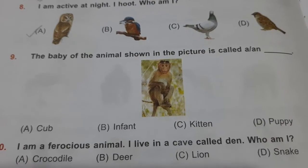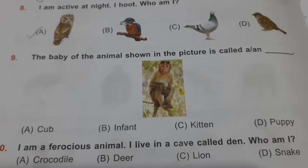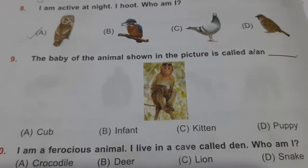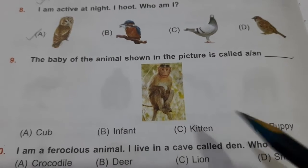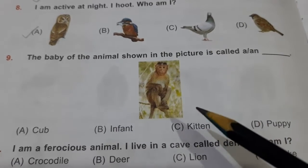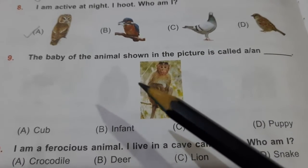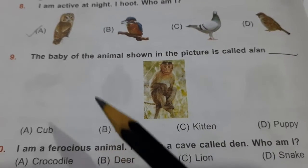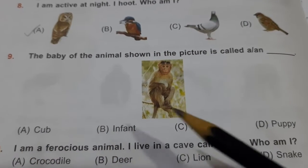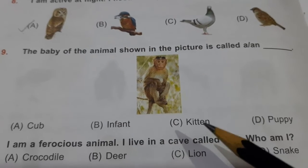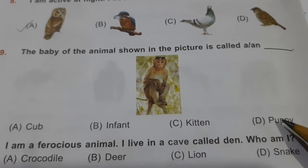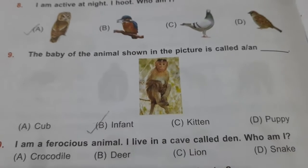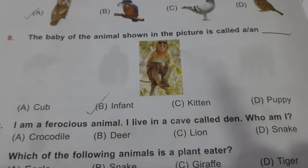Question number 9: the baby of the animal shown in the picture is called a blank. This is a baby of a monkey, and the baby of a monkey is called an infant. Cub is the baby of lion, kitten of cat, puppy of dog. The baby of monkey is called infant. Please tick it.